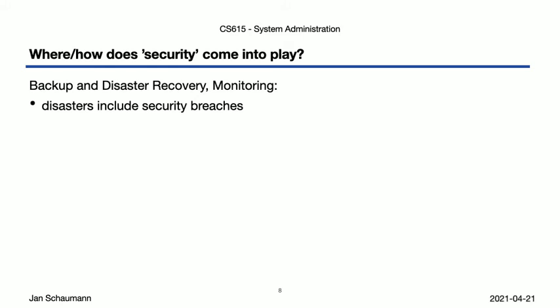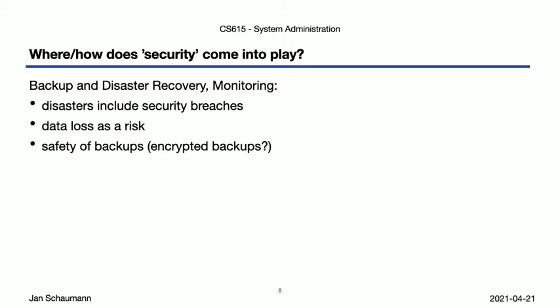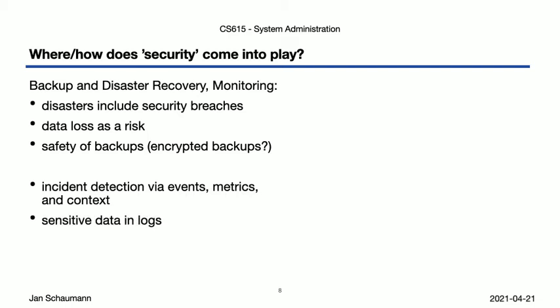When we talked about disaster recovery and monitoring, the connection to system security is obvious, as some of the disasters we have to prepare for include security breaches. But on a more general note, any data loss is a security failure. We talked a little bit about malware that may infect the backup system, or the backed-up data itself, and brushed upon the concept of encrypting data at rest as part of our backup mechanism. In a monitoring context, it is obvious that our ability to detect undesirable events is critical to system security and our defense capabilities, and we need to remain aware of the sensitivity of the data we are logging, as this may contain passwords or other confidential or otherwise private data, which may have implications on your ability to outsource monitoring to a third-party provider.